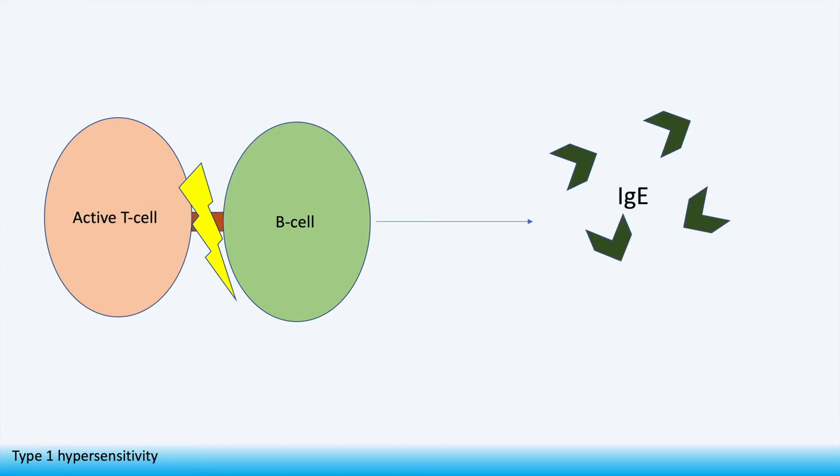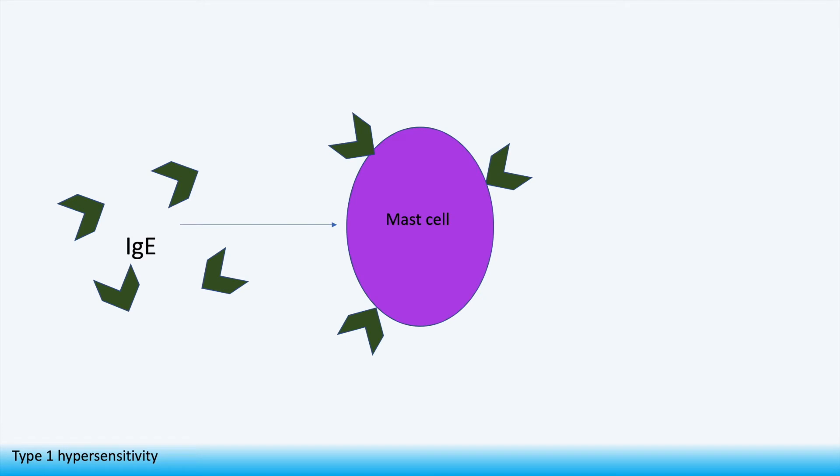This is a key step as the entire reaction is mediated by the presence of IgE antibodies. It is these antibodies which then help the mast cell detect and respond to the antigen or allergen. The IgE binds to a mast cell using the FCE-R1 receptor. The IgE produced is specific to the antigen and this step is the end of sensitization.